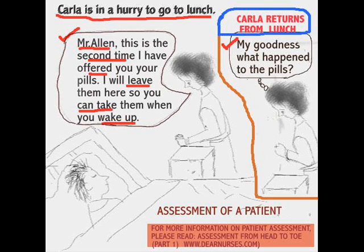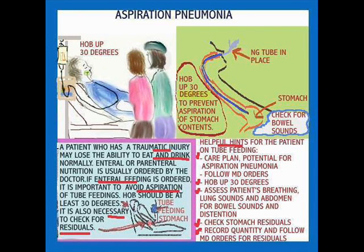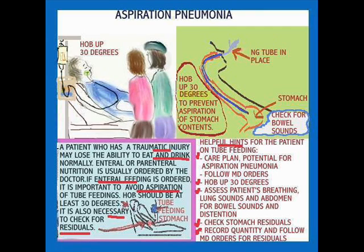Next we're going to talk about aspiration pneumonia. Any patient who's had a traumatic injury or for any reason cannot feed himself is likely to be on some kind of nutrition, whether parenteral or enteral. What's most important is that the patient on enteral nutrition has to be closely monitored, because the possibility of aspiration pneumonia is always in the background. In your care plan you would include the potential risk for aspiration pneumonia.